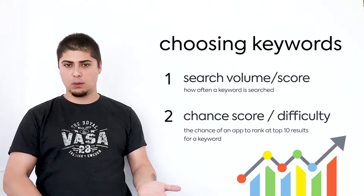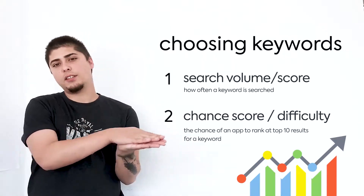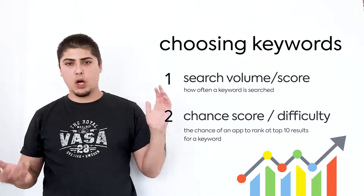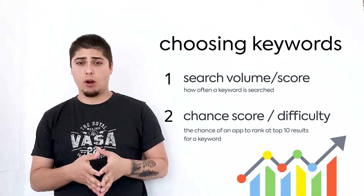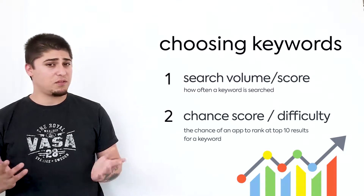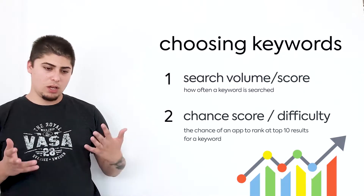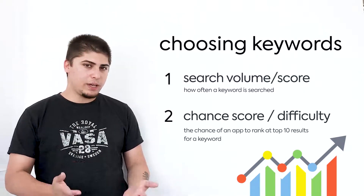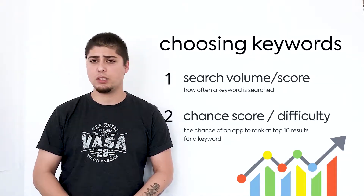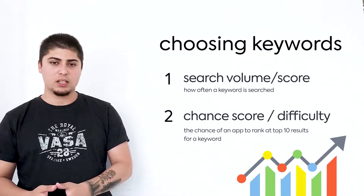The next step in keyword optimization is choosing the keywords. At the first step, perhaps you prepared a broad list of keywords — maybe around 100, 200, even 500 keywords. As you know, it's not possible to rank for all of those keywords, so you have to make a choice.